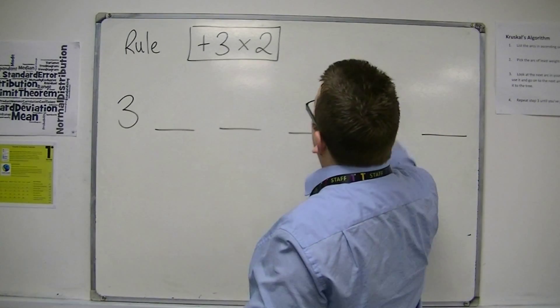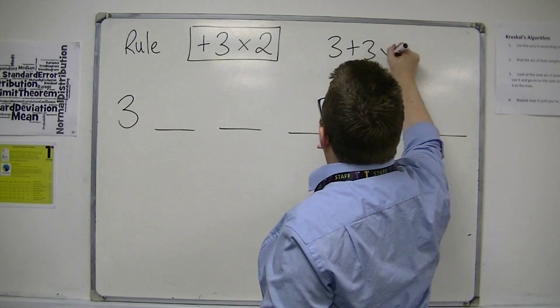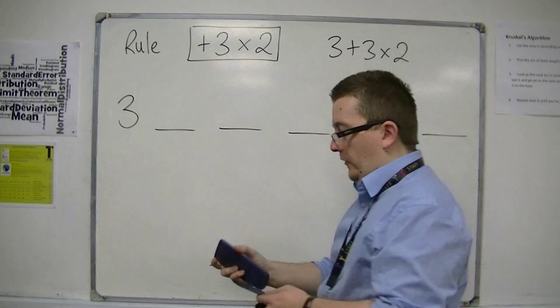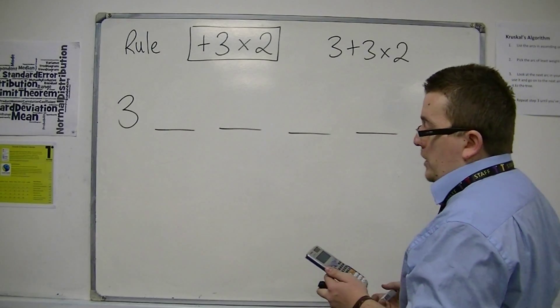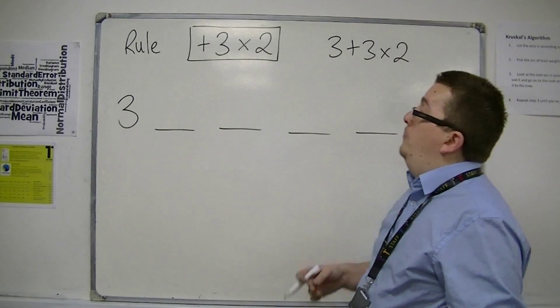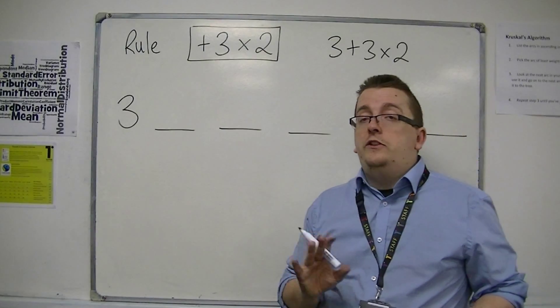If you plug that immediately into your calculator, like so, 3 plus 3 times 2, then you should get 9. But the next term is not 9.